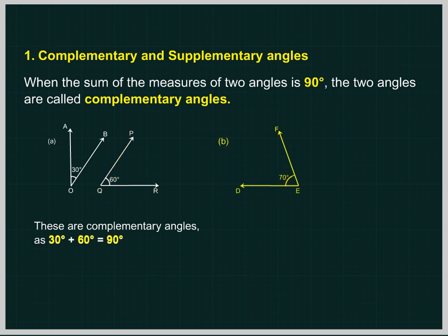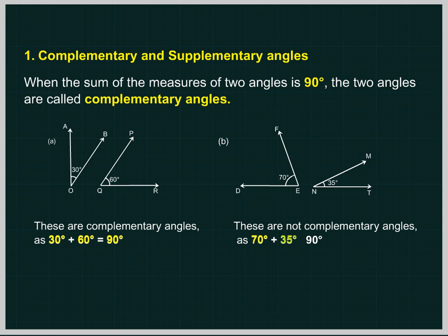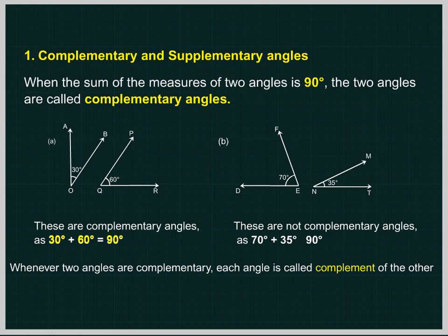Angle DEF equals 70 degree and Angle MNT equals 35 degree. These are not complementary angles as 70 degree plus 35 degree does not equal 90 degree. Whenever two angles are complementary, each angle is called the complement of the other angle. Angle AOB is the complement of Angle PQR and vice versa.